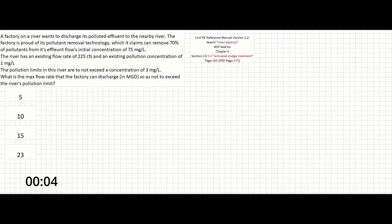A factory on a river wants to discharge its polluted effluent to the nearby river. The factory is proud of its pollutant removal technology, which it claims can remove 70% of pollutants from its effluent flows' initial concentration of 75 milligrams per liter. The river has an existing flow rate of 225 CFS and an existing pollution concentration of 1 milligram per liter. The pollution limits in this river are not to exceed a concentration of 3 milligrams per liter.